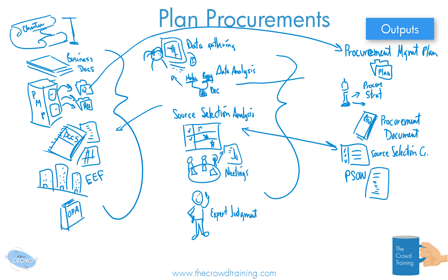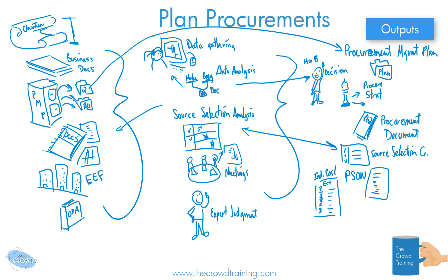Here we had the analysis of whether or not to make, buy, lend, or lease. So we should have a decision made as to what is the best course of action — that is our make-or-buy decision. We might also need to get research and facts to determine what the expected costs are for our needs. Ideally, we want to get something from outside for an independent cost estimate.